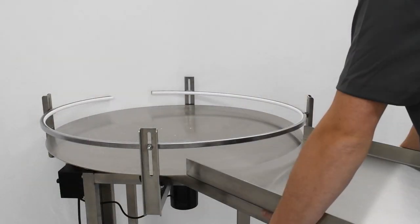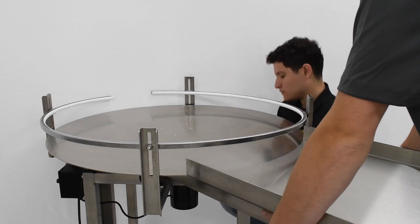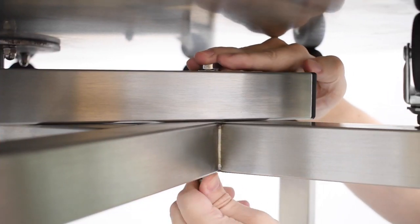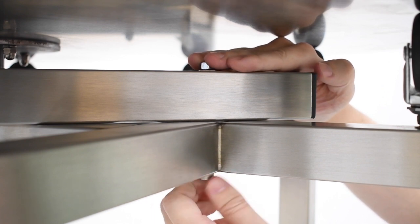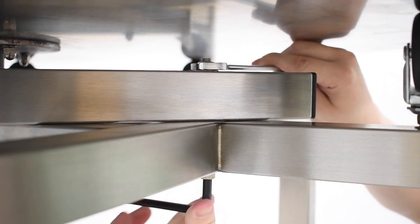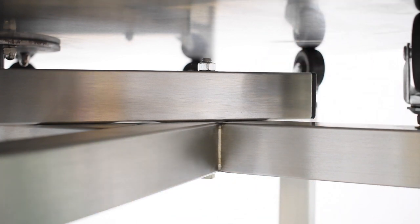Have a team member hold the infeed table level with the accumulation table. Another team member should get below the table and thread the included bolts and washers through the table frame and mounting bars. Use a half-inch wrench and quarter-inch hex key to tighten this hardware and lock the infeed table in place.